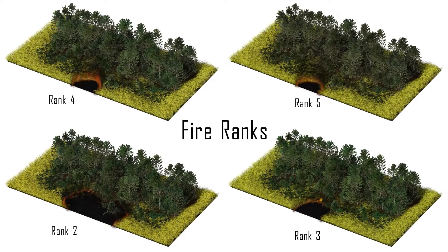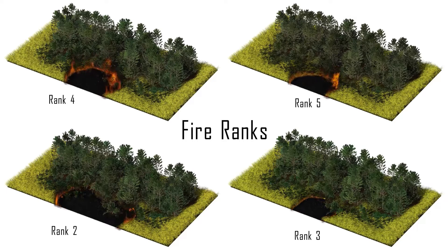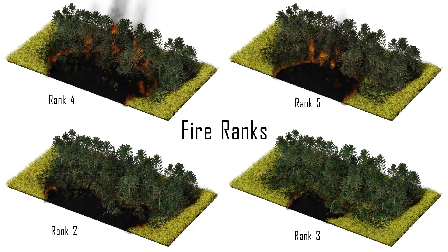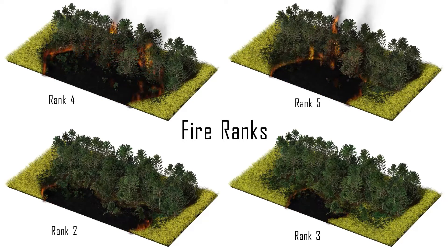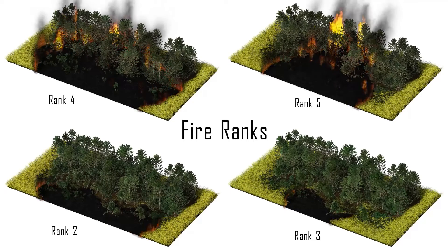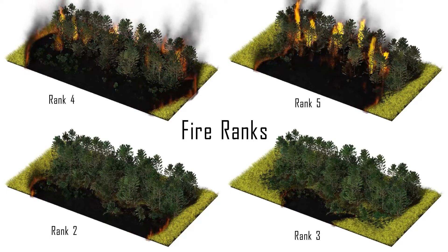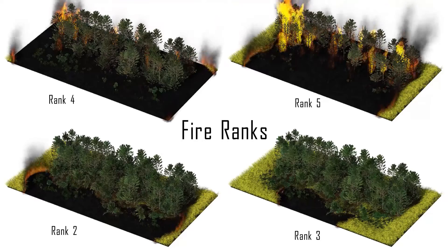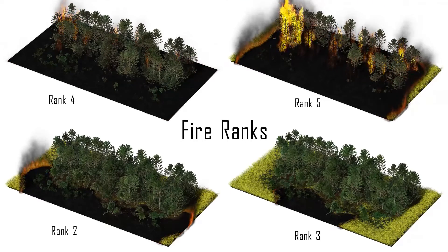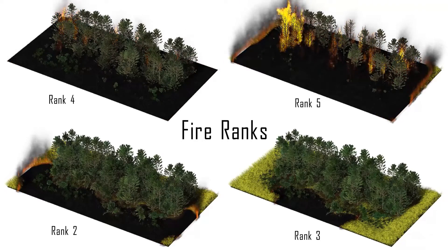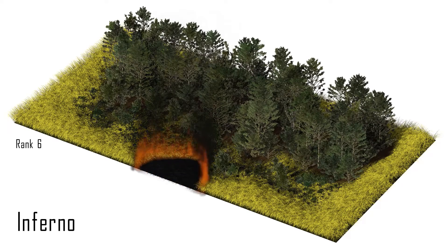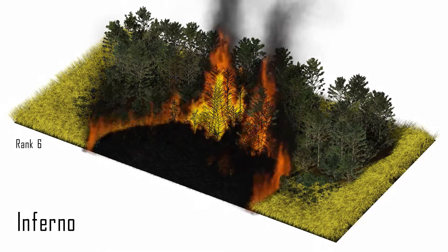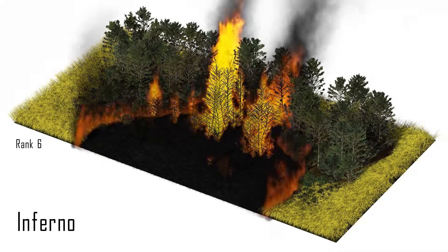Surface wildfires can be relatively harmless phenomena when their progression is constrained to the forest floor. Once wildfires start torching trees and progressing vertically, a dangerous crown fire can be initiated. The most severe wildfires can turn into a blazing inferno that consumes all the biomass in a forest.